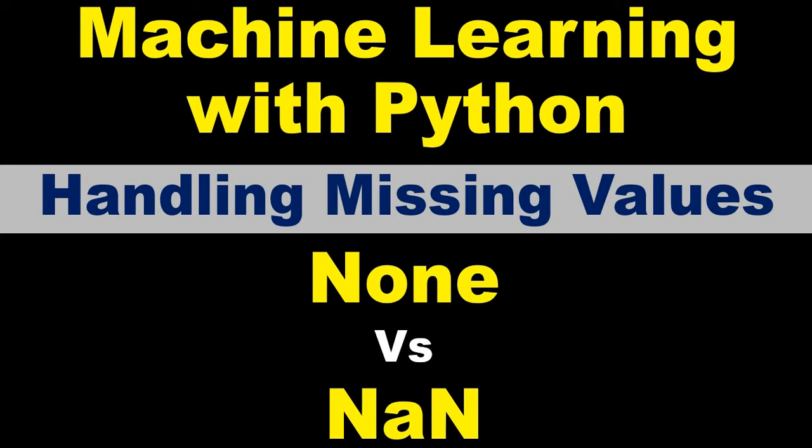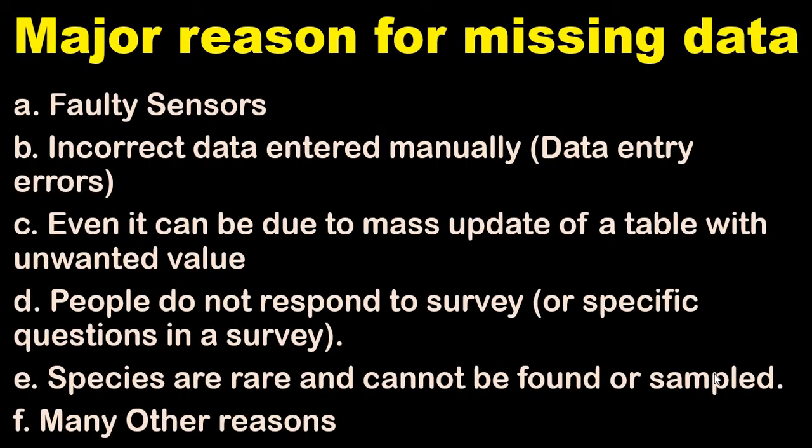When we get values from some database or from sensors, the missing values will be filled with None or NaN. The different reasons for missing data include a faulty sensor, incorrect data entered by manual data entry jobs, or a mass update of a table with an unwanted value, and people not responding to surveys, missing one or two questions.